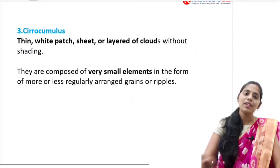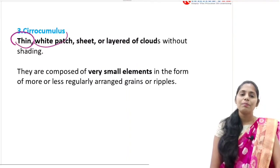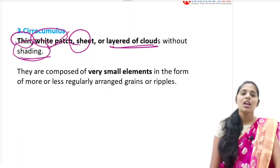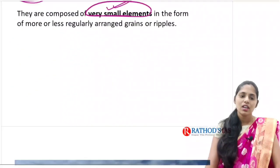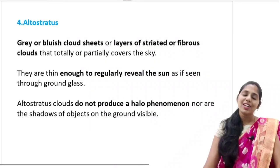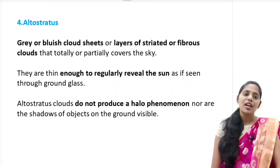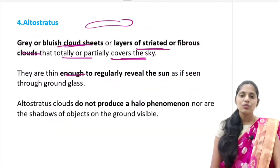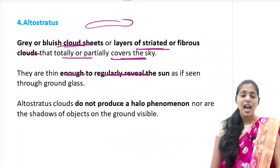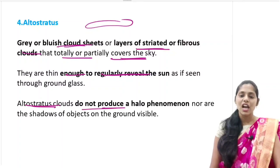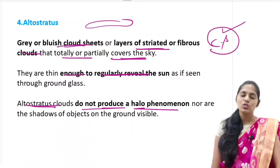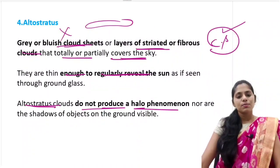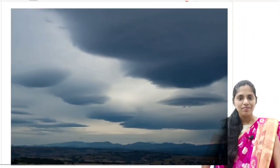Cirrocumulus clouds are thin white patch, sheet, or layered clouds without any shading, composed of very small elements. You can see grains or ripples in the sky. Next is altostratus - these are gray or bluish cloud sheets, layers of striated or fibrous clouds, totally or partially covering the sky. They are thin enough to regularly reveal the sun as if seen through ground glass. Altostratus clouds do not produce any halo phenomena - remember, it is cirrostratus that leads to halo, not altostratus.